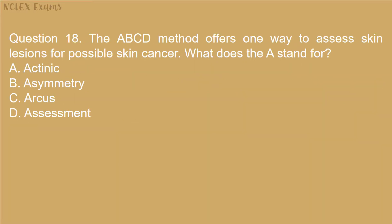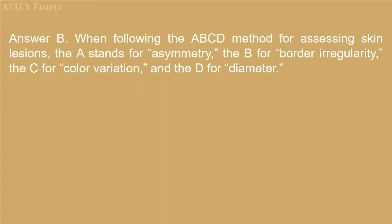Question 18: The ABCD method offers one way to assess skin lesions for possible skin cancer. What does the A stand for? Answer B: When following the ABCD method for assessing skin lesions, the A stands for asymmetry, the B for border irregularity, the C for color variation, and the D for diameter.